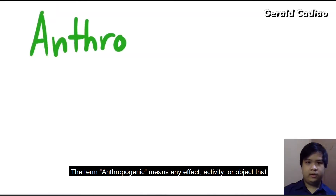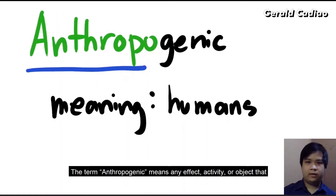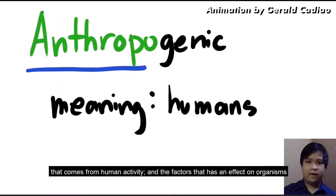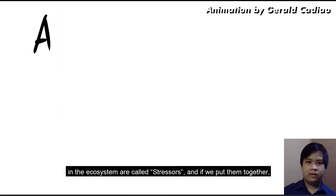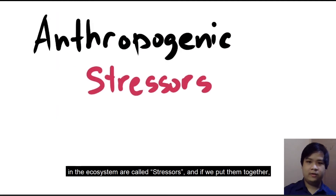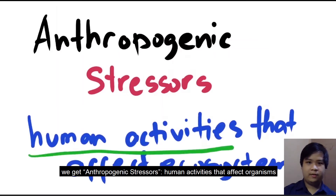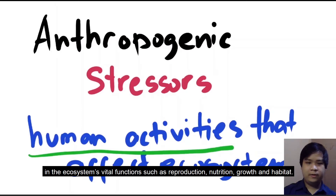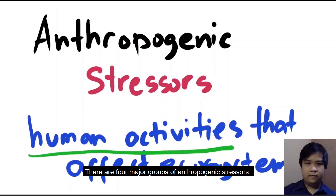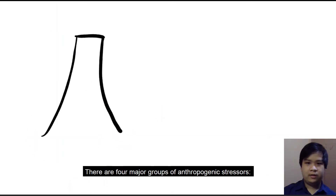The term anthropogenic means any effect, activity, or object that comes from human activity. The factors that have an effect on organisms in the ecosystem are called stressors. Putting them together, we get anthropogenic stressors — human activities that have an effect on organisms in ecosystems, affecting vital functions such as reproduction, attrition, growth, and habitat. There are four major groups of anthropogenic stressors.